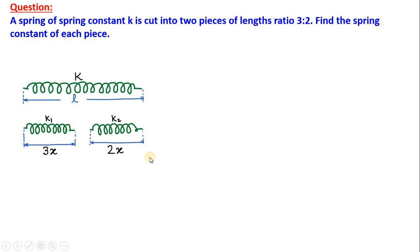What about the lengths? Let us suppose the lengths of the small pieces are 3x and 2x. Because it is given in the question that the lengths are in the ratio 3 is to 2. So, we can suppose that the first one has length 3x, the second one has length 2x. If you divide the length ratio 3x divided by 2x is same as 3 is to 2.